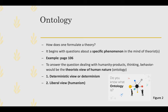Ontology: how does one formulate a theory? It begins with questions about a specific phenomenon in the mind of the theorist. The example we'll be working with across all the building blocks is: do the media frame people and events to influence public opinion in a specific direction? To answer this, we would deal with the humanity aspect in ontology — the products of thinking and behavior — and the theorist's view of human nature, which takes on either a deterministic view (determinism) or a liberal view (humanism).